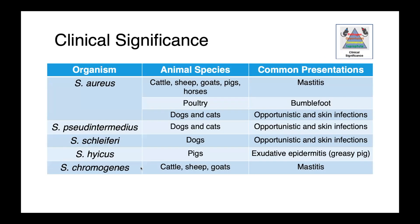We see a variety of clinical diseases associated with Staph in both people and animals. Staph aureus is frequently encountered as a cause of mastitis or mammary tract infections in cattle, small ruminants, pigs, and horses. We see bumblefoot in poultry, and in dogs and cats we see opportunistic and skin infections whenever the organism gains access to a sterile site. In dogs and cats, a similar picture is seen with both Staph pseudintermedius and Staph schleiferi causing opportunistic and skin infections. In pigs, Staphylococcus hyicus causes exudative epidermitis or greasy pig disease. And the coagulase negative species Staph chromogenes causes mastitis in cattle and small ruminants.